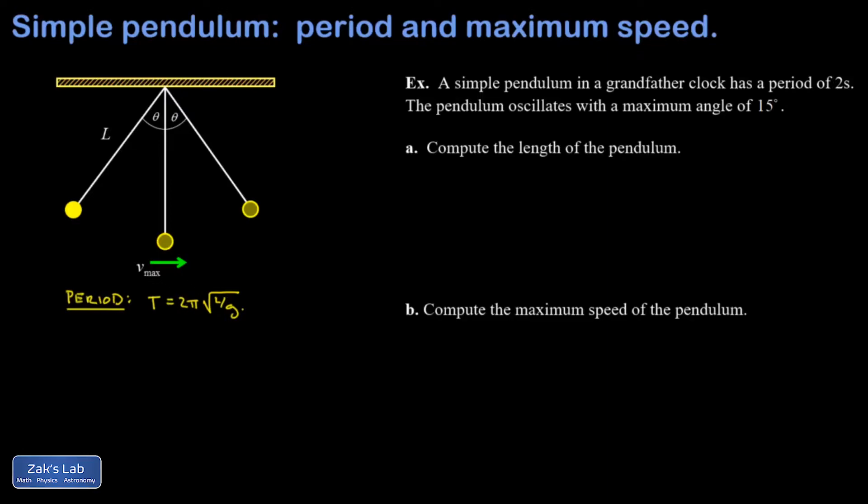Now this is based on an assumption that was used to solve that differential equation: that the amplitude is not too large. So in this problem, you'll notice I'm sticking with an angle of 15 degrees. That's pretty safe to not cause too big of an error with this period formula.